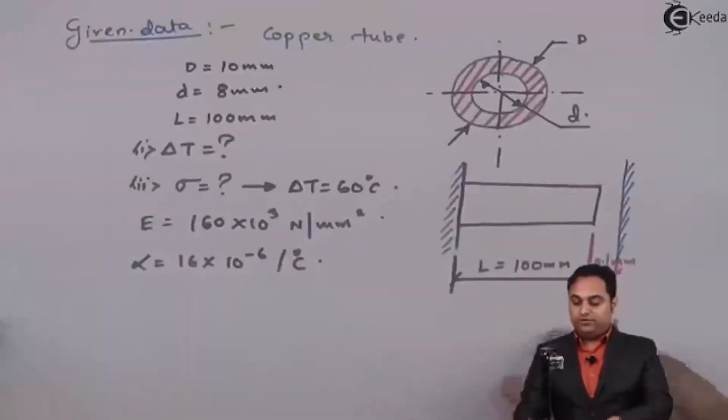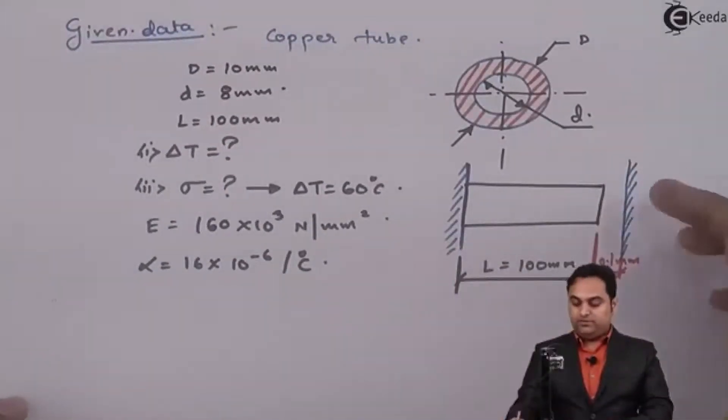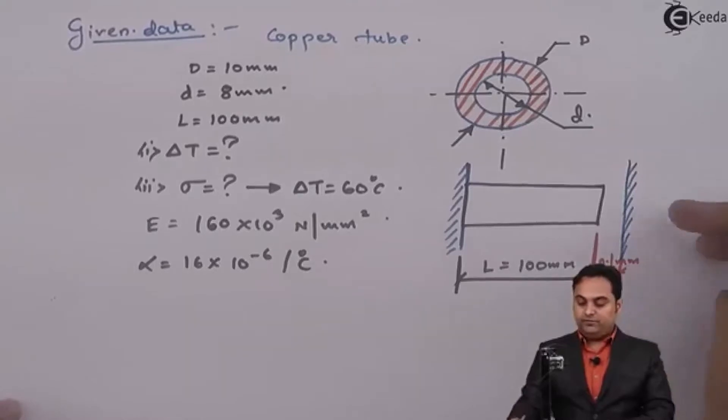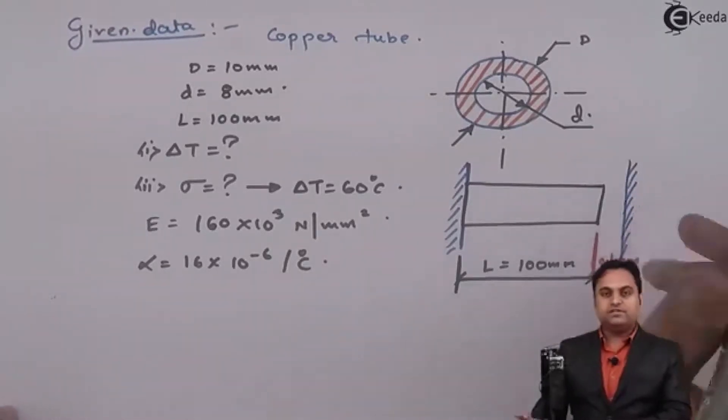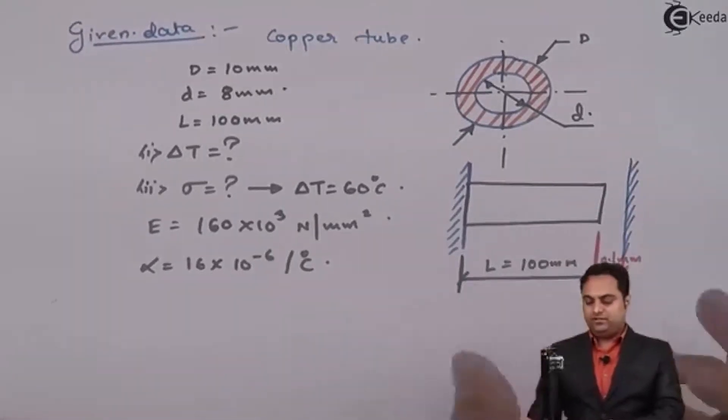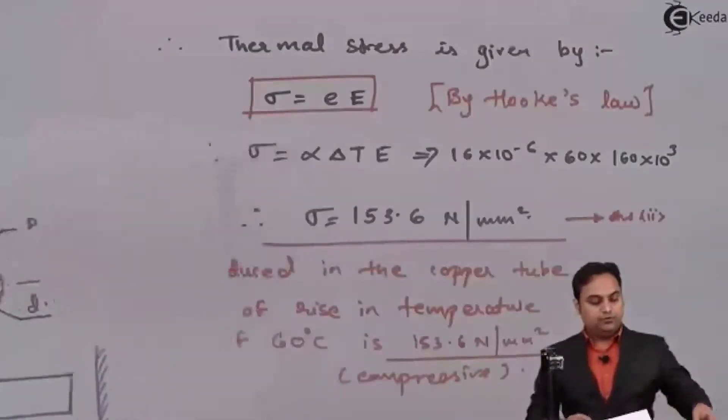Because the steel rod will try to expand but the moment the wall is there, there would be compressive force acting from both the sides that would result in the compressive stress in the copper tube.